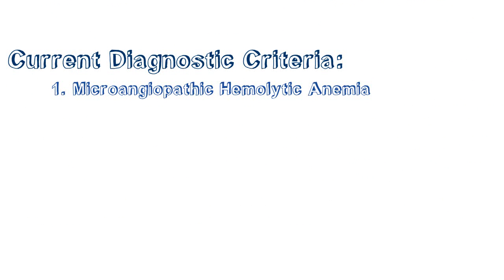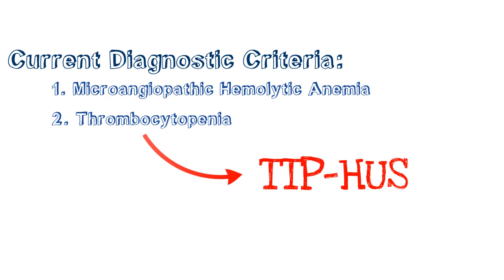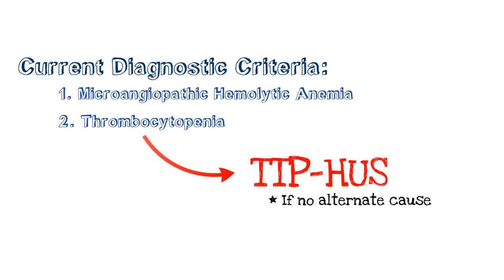One is a microangiopathic hemolytic anemia. Two is thrombocytopenia. If you have these two criteria, you can diagnose TTP-HUS. But make sure that you've eliminated any alternate cause for the symptoms that the patient has.